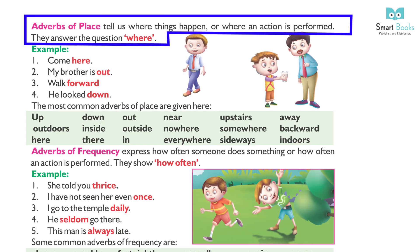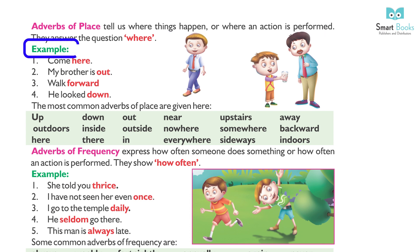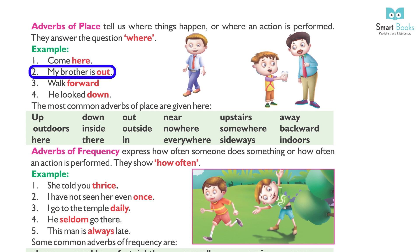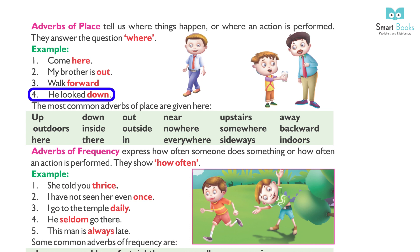Adverbs of place tell us where things happen or where an action is performed. They answer the question 'where.' Examples: 1. Come here. 2. My brother is out. 3. Walk forward. 4. He looked down.